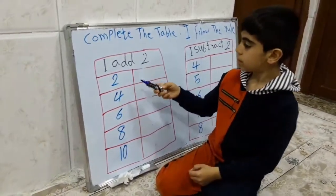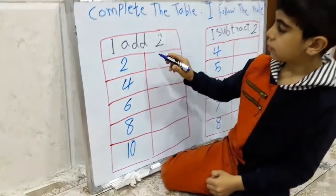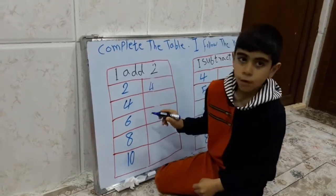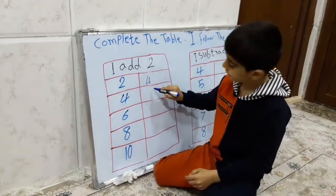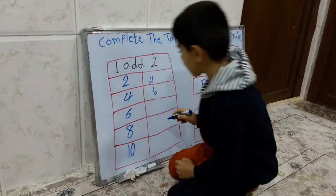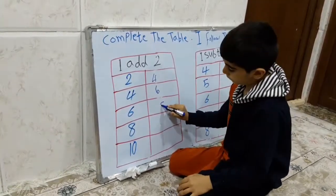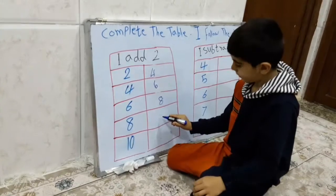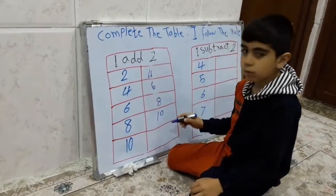Add 2. 2 plus 2 equal to 4. 4 equal to 6. 6 equal to 8. 8 equal to 10. 10 equal to 11.